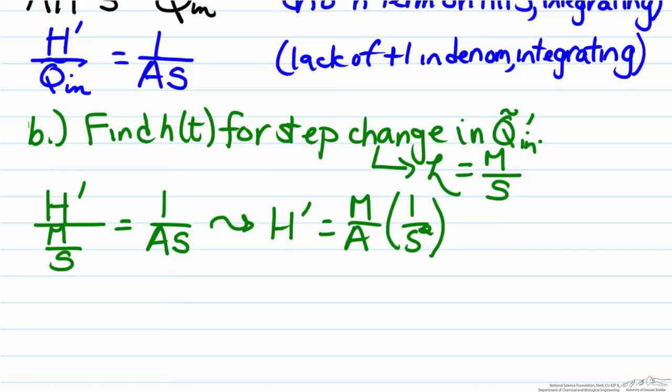When we isolate this we have the fact that H' equals M/A times 1/s^2. The inverse Laplace transform of this can be taken quite easily, so the inverse Laplace transform of H' will be h, and the inverse Laplace transform of 1/s^2 is t. So therefore our final answer here is (M/A)*t.